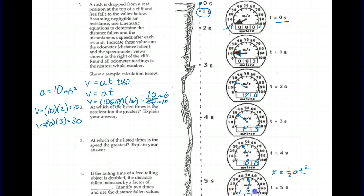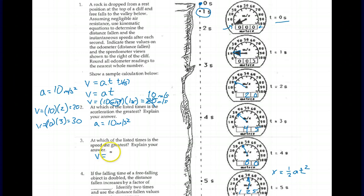The distance at 5 seconds is 125 meters. Now, at which of the listed times is the acceleration the greatest? The acceleration doesn't change — it stays at 10 meters per second squared the entire time. At which time is the speed the greatest? Speed is greatest at 5 seconds, when it's 50 meters per second. Although acceleration is constant, speed keeps increasing. Finally, if the falling time is doubled, the distance fallen increases by a factor of 4 — because of the squared relationship.